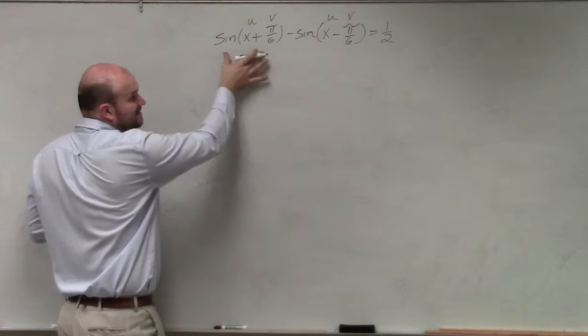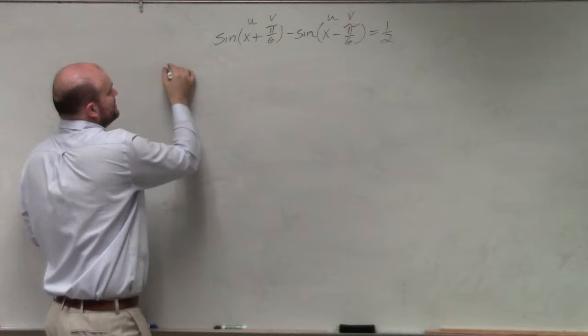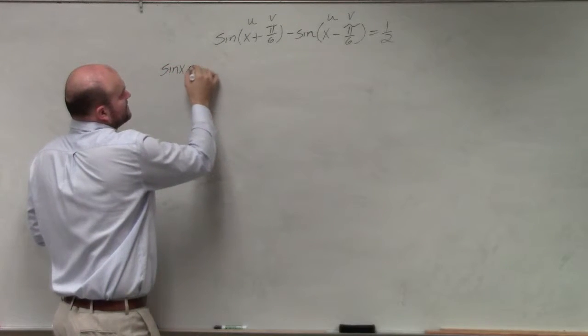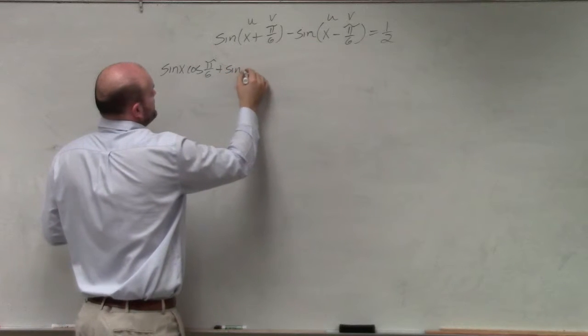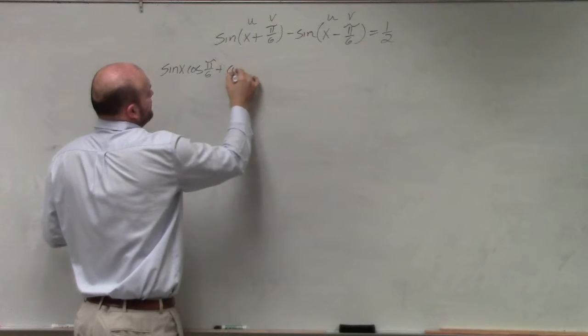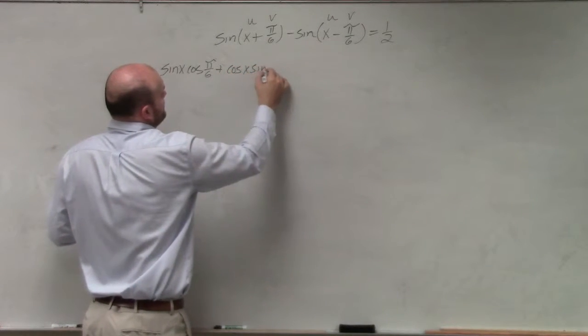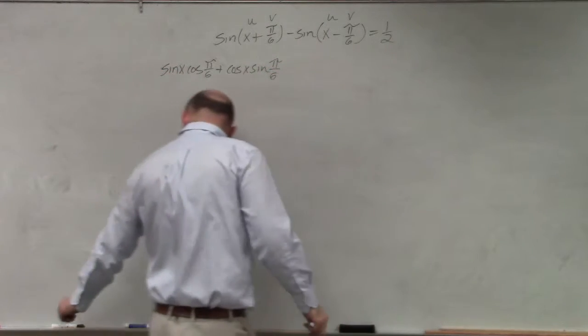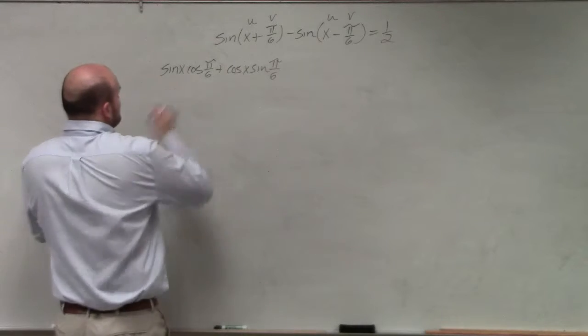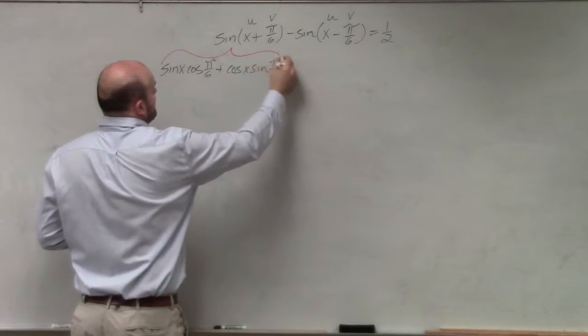So first thing we do is apply this formula over here. This is going to be sine of x cosine of pi over 6 plus cosine of x sine of pi over 6. So what I just did is I applied the sum and difference formula for that.